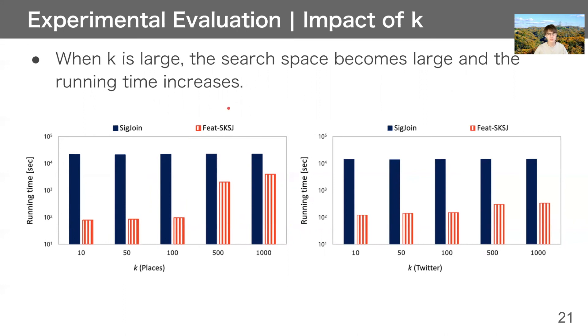Next, we also confirm impact of k. k means the result size. The x-axis is k and y-axis is running time. As you can see, when k is large, the search space becomes large and the running time increases. However, Feat-SKSJ outperforms SicJoin on all settings.